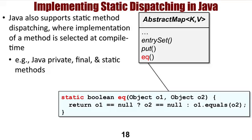For example, the static EQ method in AbstractMap is statically dispatched to compare whether two objects are equal.